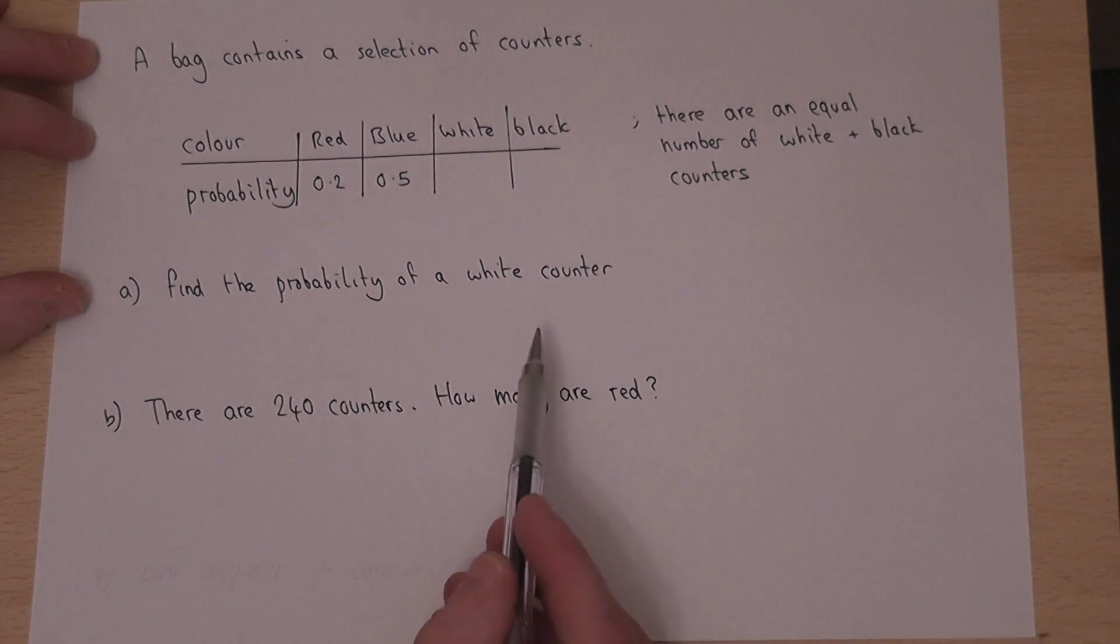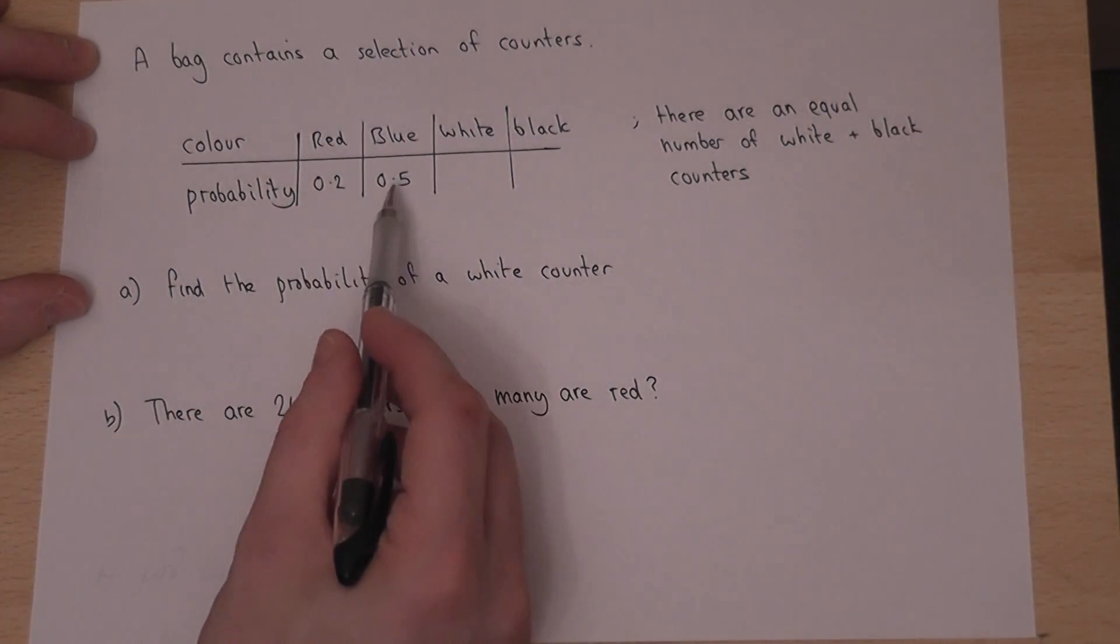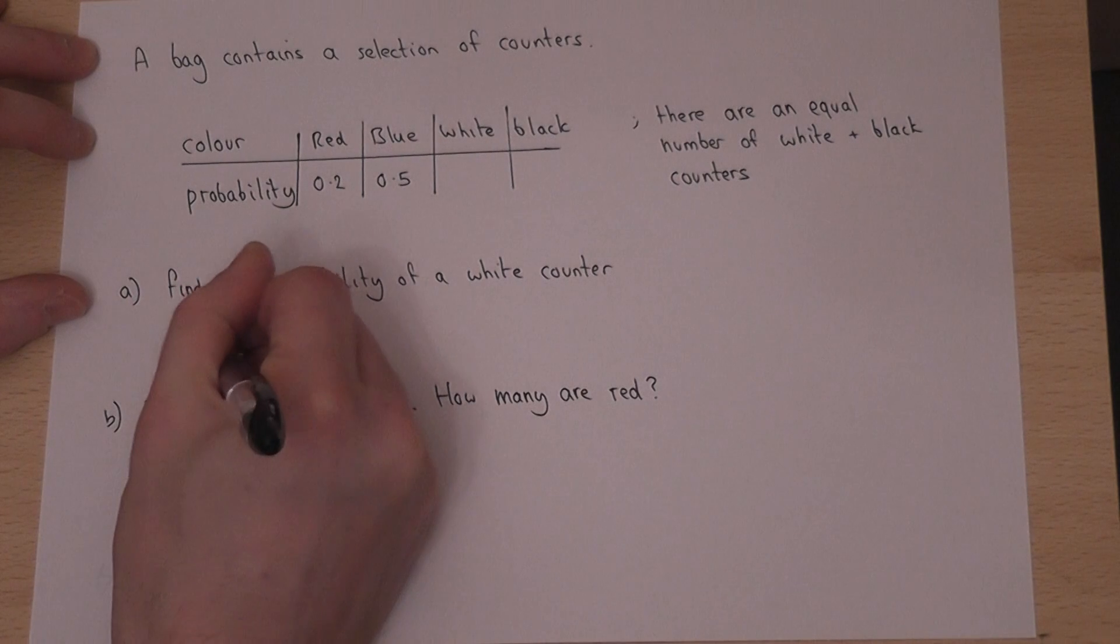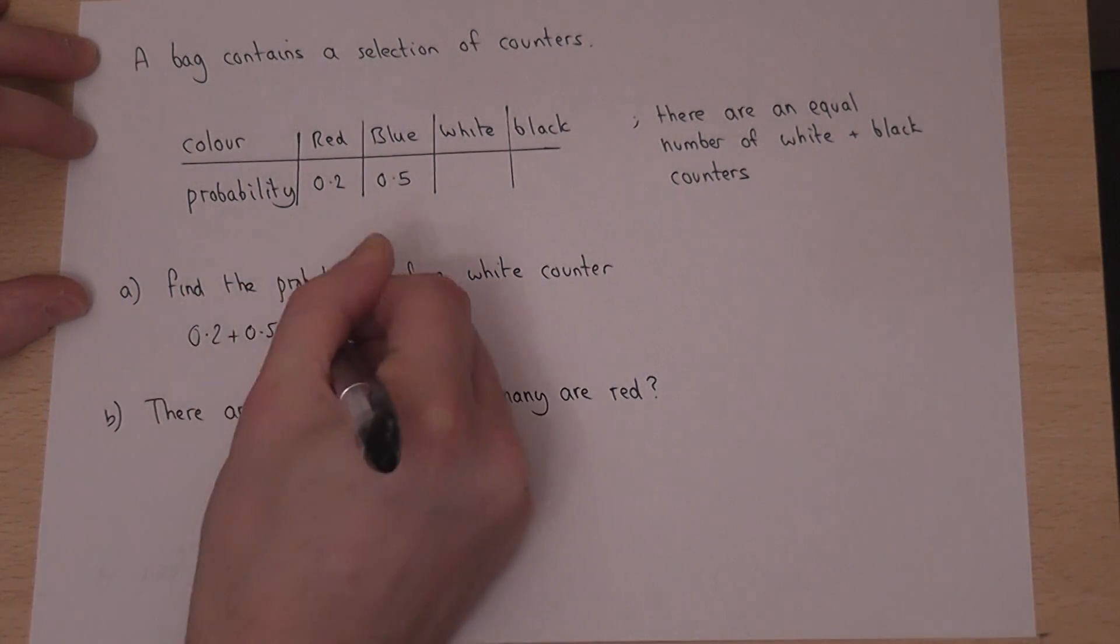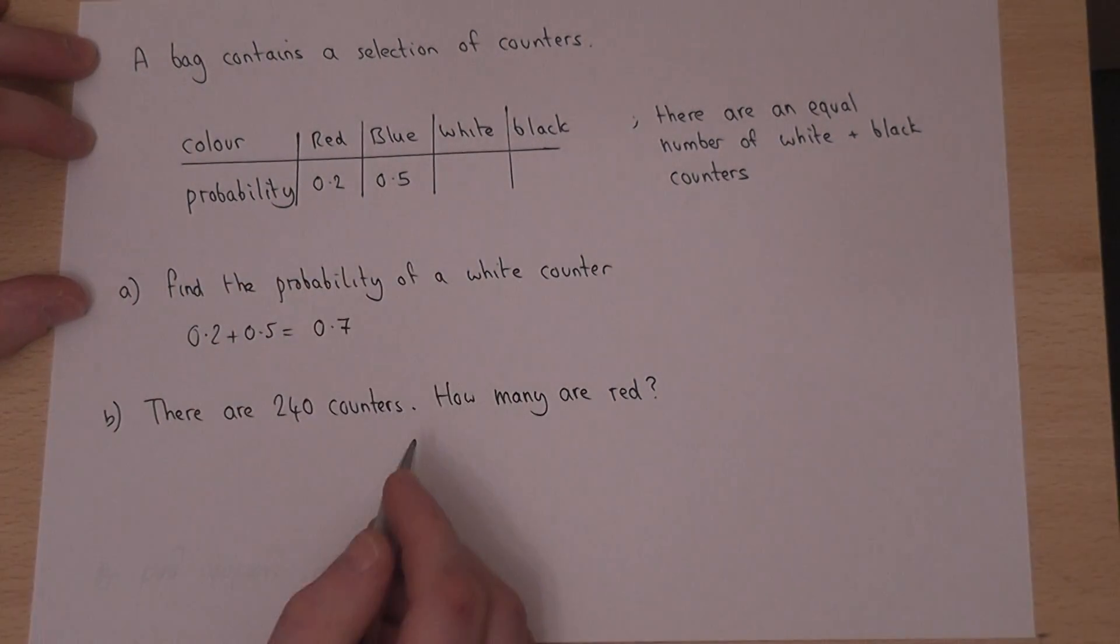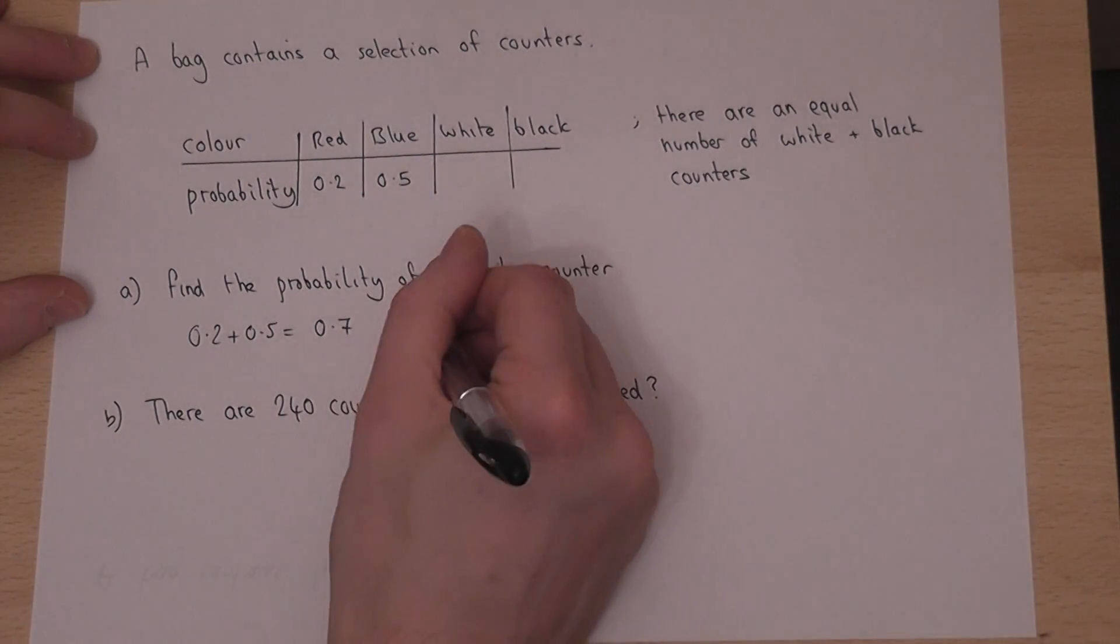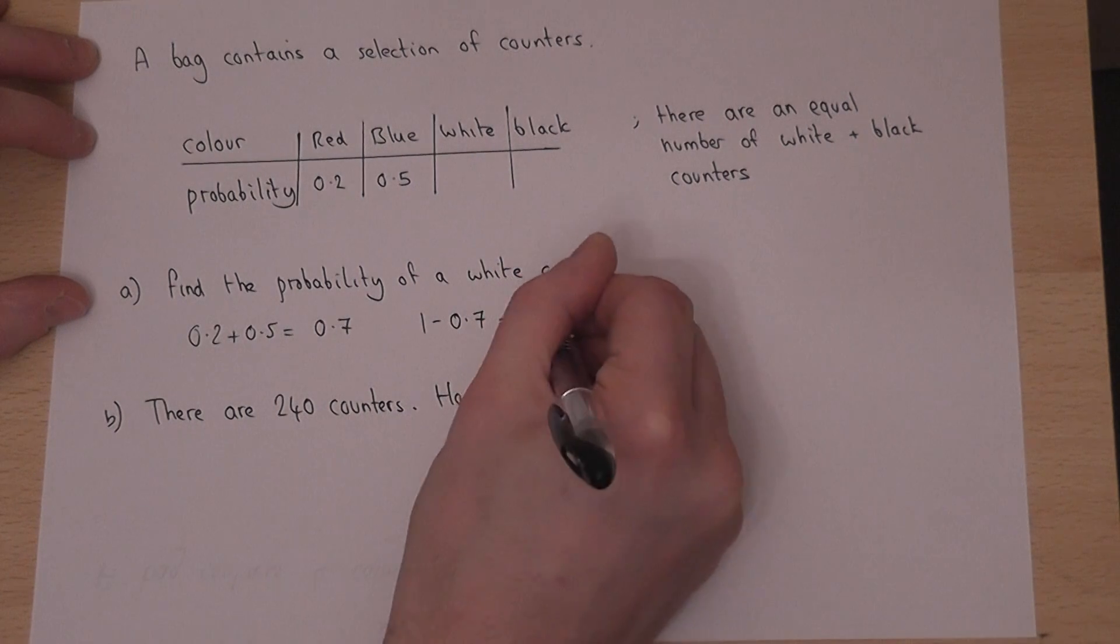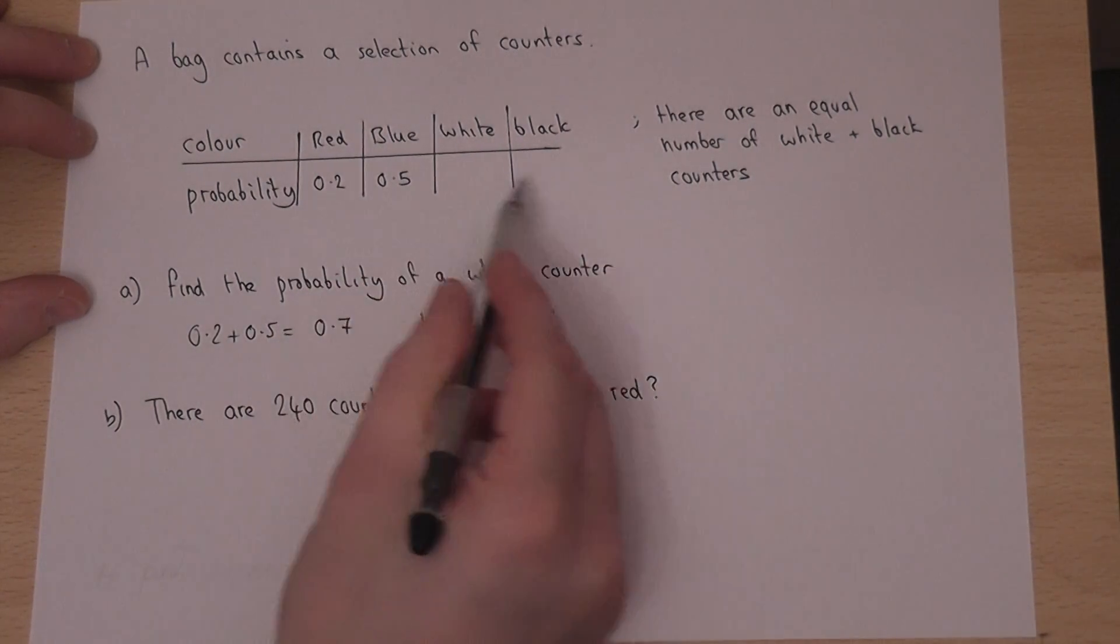For this we work out what 0.2 plus 0.5 is, which is 0.7. So the chance of a white or black must be 1 minus 0.7, which is 0.3, because they must all add up to 1.